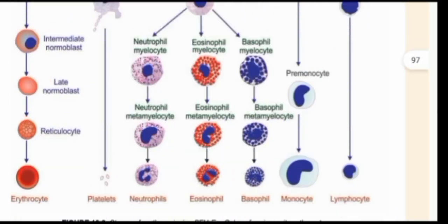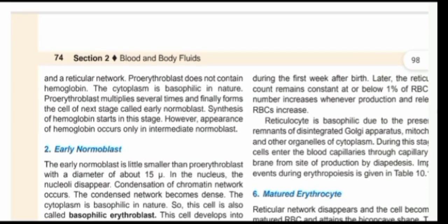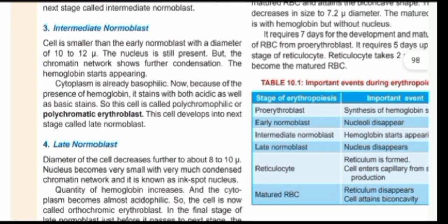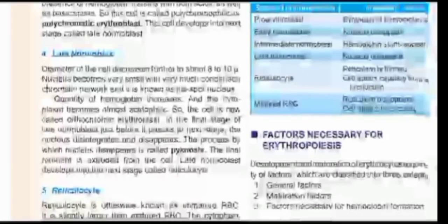The early normoblast is also termed a basophilic erythroblast. At this stage, it becomes smaller and the diameter also decreases, with condensation of the chromatin network. The intermediate normoblast is where hemoglobin starts developing. At the late normoblast, the diameter decreases further to about 8 to 10 microns — you don't need to memorize these values, just know there is a decrease in diameter and size. At the late normoblast stage, the quantity of hemoglobin increases.